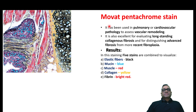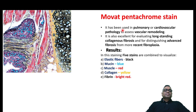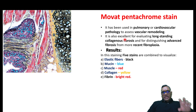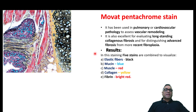The next important stain also given in Robbins is Movat's pentachrome stain. The name itself tells us there are five colors. It is basically used in pulmonary and cardiovascular pathology for identification of vascular remodeling. It is an excellent stain to identify long-term collagenous fibrosis. It can distinguish between very late or advanced fibrosis from recent fibrosis.